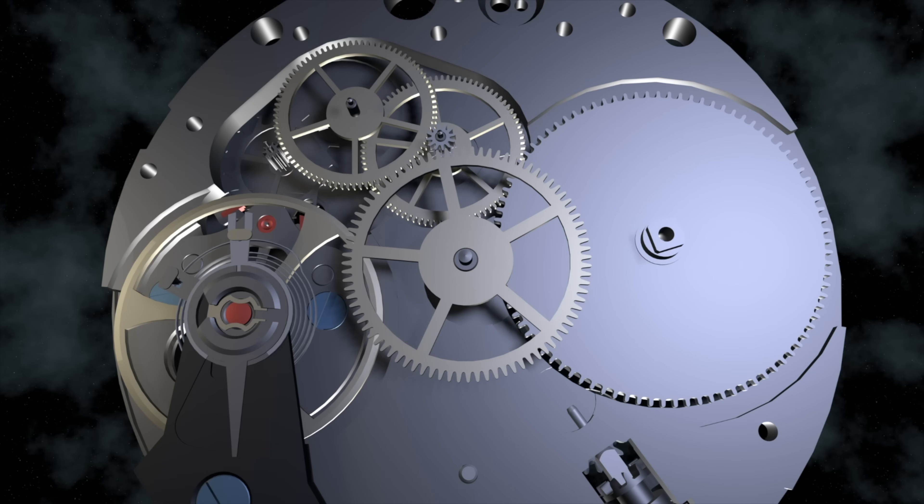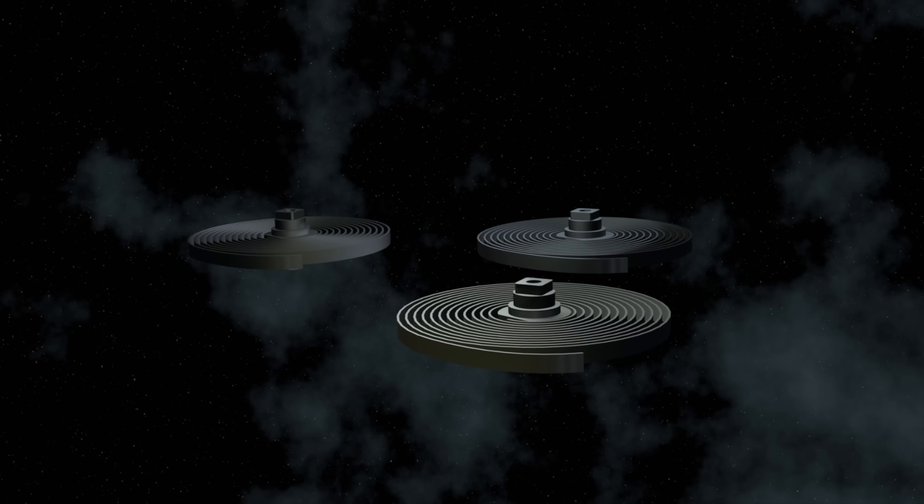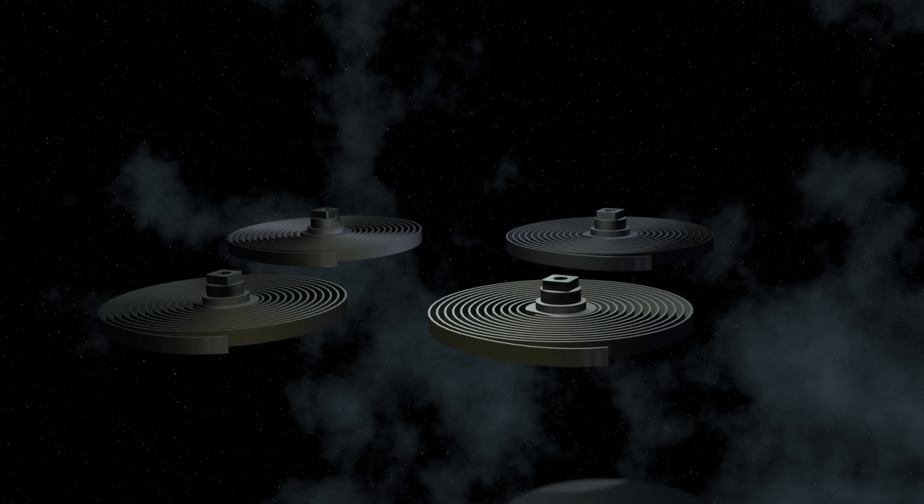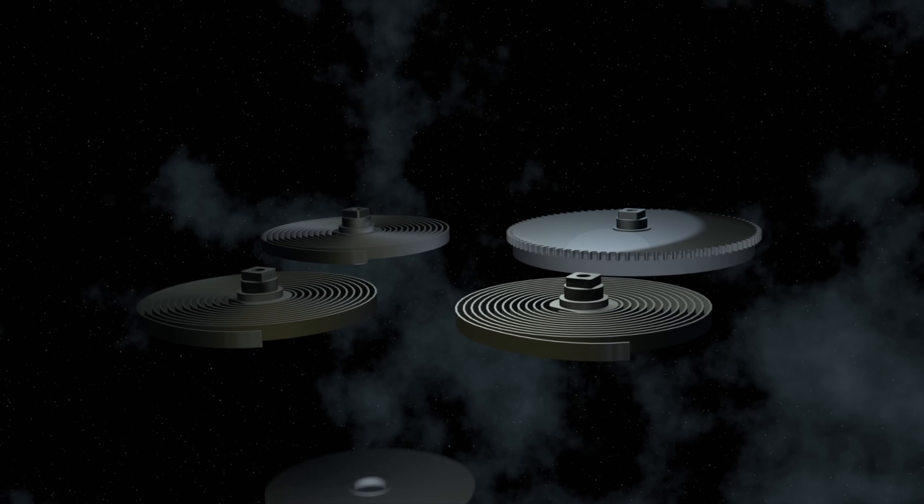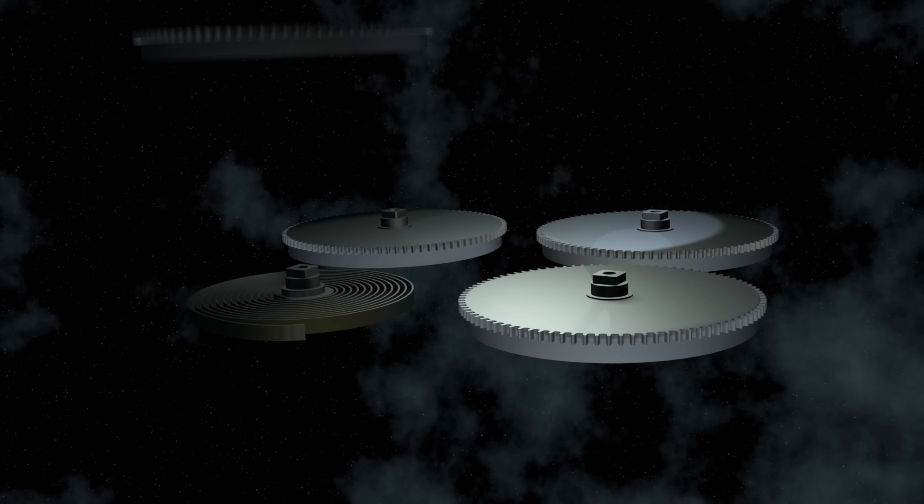Now the power reserve, the amount of energy your watch can store or essentially the amount of time your watch can keep on ticking, is mostly determined by the size of the mainspring. And at times when a lot of energy is needed, a watch movement can have more than one barrel, so meaning more than one mainspring. You might have heard of double barrel, triple barrel, or even four barrel calibers.